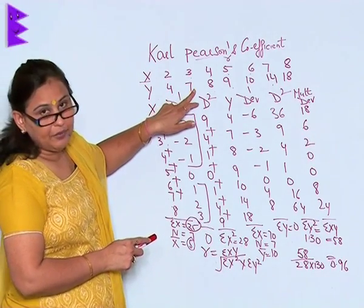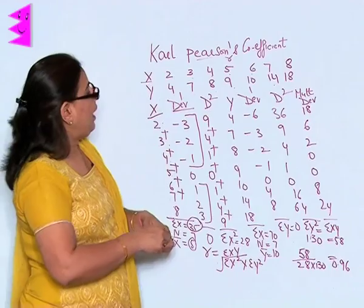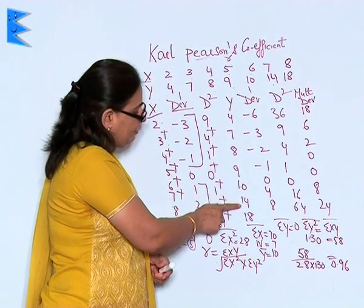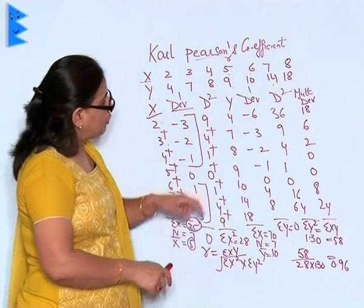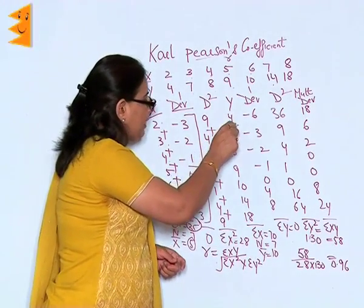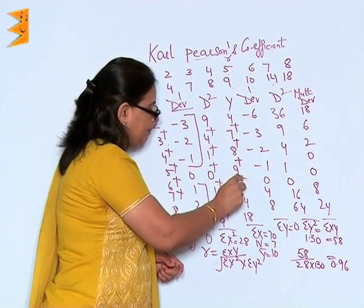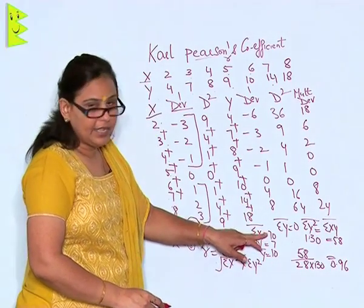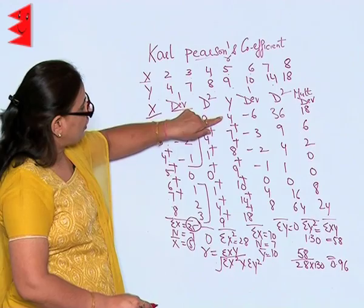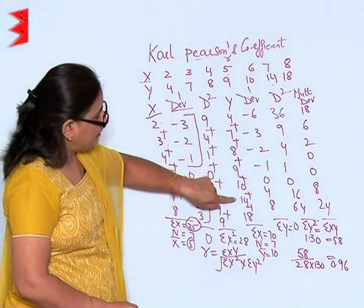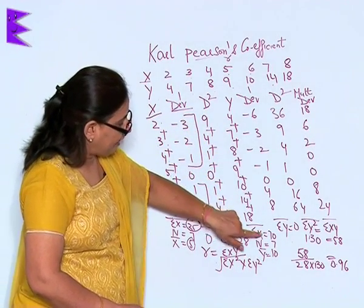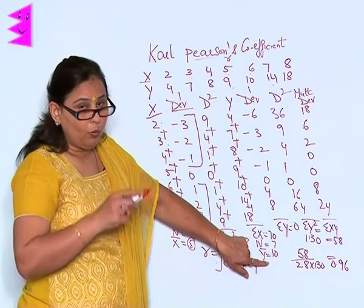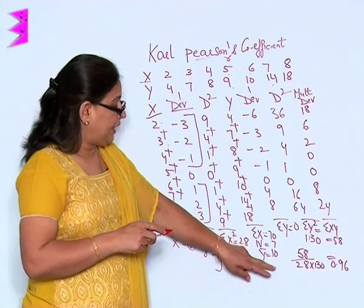Next we have Y. The observations are 4, 7, 8, 9, 10, 14 and 18. When I add them: 4 plus 7 plus 8 plus 9 plus 10 plus 14 plus 18, sigma Y is 70. The number of observations is 7. So when I divide 70 by 7, Y-bar is 10.